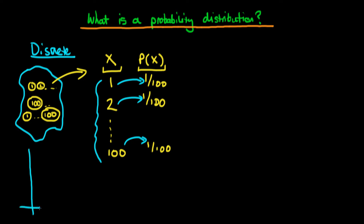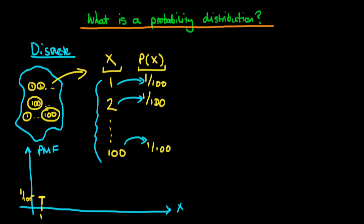In the discrete case, we can graph on the y-axis something called the probability mass function. This gives the probability associated with each particular discrete value that the random variable can take on. For the value one, there's a 1/100 chance, represented by a bar of that height.